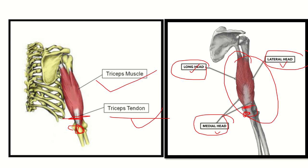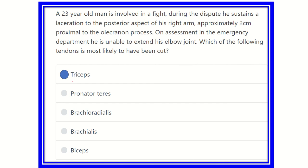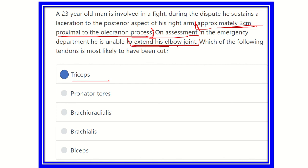Our final answer is the tendon of the triceps, because the tendon of the triceps lies just proximal to the olecranon process. The olecranon process is the attachment of the triceps muscle, and the triceps muscle causes extension of the elbow joint. It is a large and strong muscle responsible for elbow extension, so the triceps muscle tendon is what was cut during this incident. Thank you all.